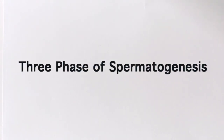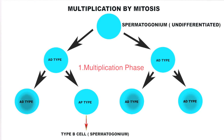There are three phases of spermatogenesis. The first phase is the multiplication phase. As we can see in this picture, the spermatogonium — an undifferentiated cell — differentiates into different types of cells: the Ad-type cell and the Ap-type cell. The Ap-type then differentiates into the Type B cell. We will discuss this multiplication phase in more detail later.